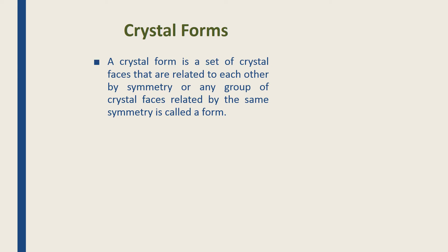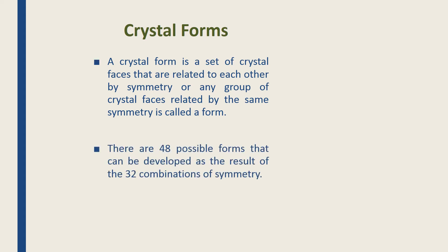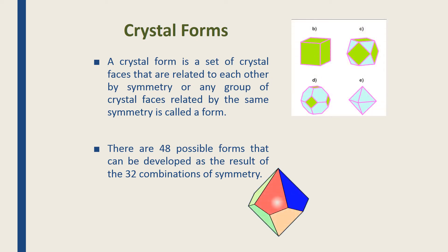Crystal form means every crystal has some faces, and those faces are related to each other by symmetry. There are 48 possible forms that can be developed as a result of the 32 combinations of symmetry. You are studying only seven systems, but there are 48 possible forms — these are just shapes or crystal forms of different crystals.